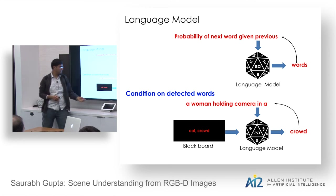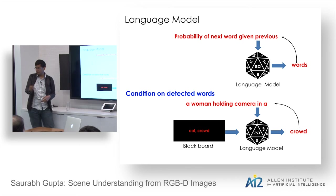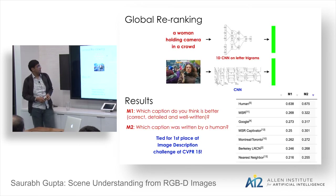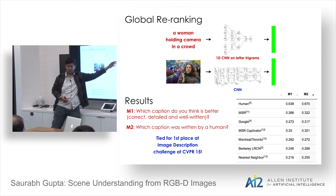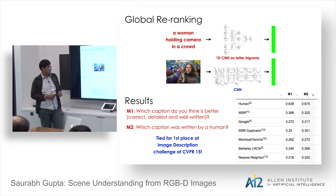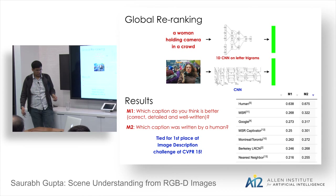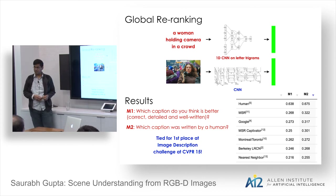Motivated by the grounded localization seen in captioning visualizations — knowing that a man is sitting on a couch — we wanted to make this more concrete and evaluable. We collected a dataset for this task: given an image, identify a person, their action, and the objects in each semantic role — for example, here is the bat being used to hit, and here is the ball being hit.